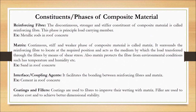Let us see the different constituents of composite material. The first constituent is reinforced fibers, which are the discontinuous, stronger, and stiffer constituent of composite materials. Fibers are an important constituent and are the load-carrying members. In the case of a concrete roof, the example of fiber is iron rods — these are the main load-carrying members and they are stiffer and stronger.